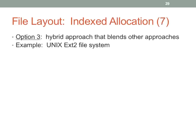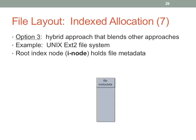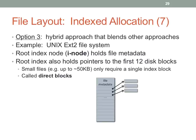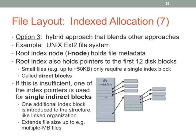The third option is a hybrid approach, which is basically what Unix has been doing for a long time — this is ext2, and ext3/ext4 add facilities without changing the fundamental idea. There's an index node as the root. The first 12 disk blocks are referenced directly from the root inode — we call them direct blocks because you directly access them from the root index. If you have a roughly 50-kilobyte file, you only need one indexing block — that's nice.